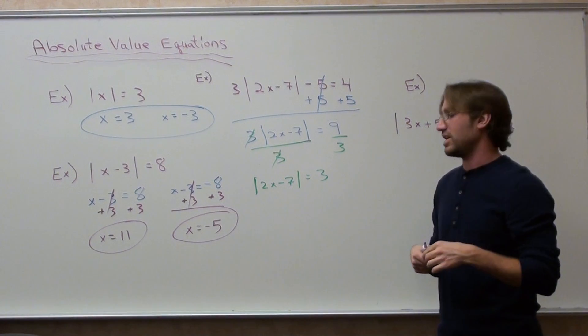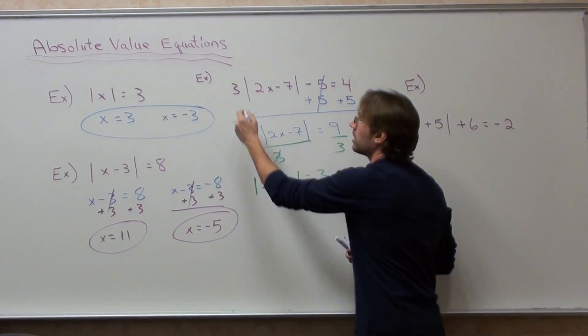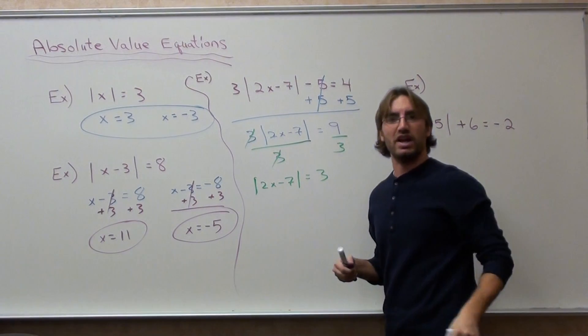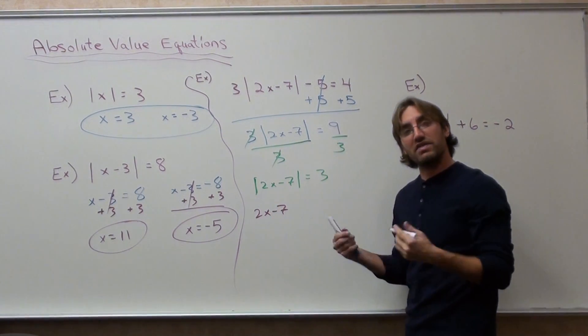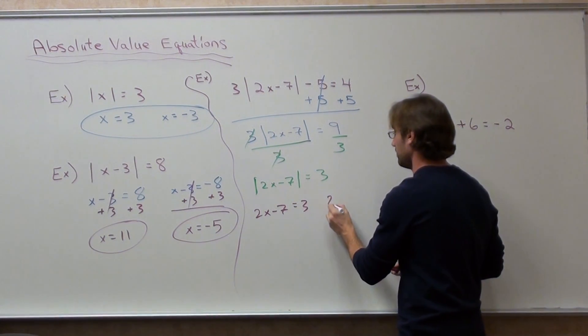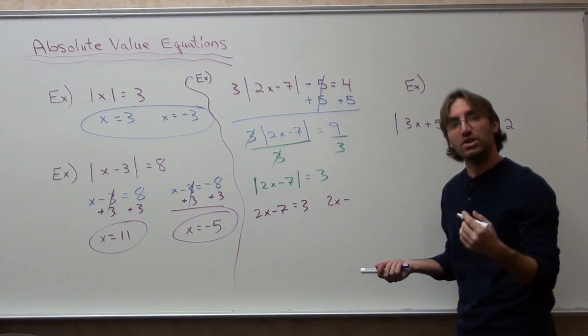Now I can work my magic. Now I can say, let me separate that really quickly. Two x minus seven equals three. Two x minus seven equals negative three.